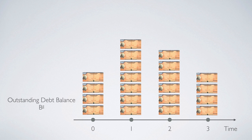So therefore, if we can observe the outstanding public debt balance over time from day 0, 1, 2, 3 as what we saw on the slide, then we know that compared to day 0, on day 1 the change of government bonds is a positive number. And for day 2 and 3, the balances are decreasing, meaning the delta BG numbers are negative for these two days.